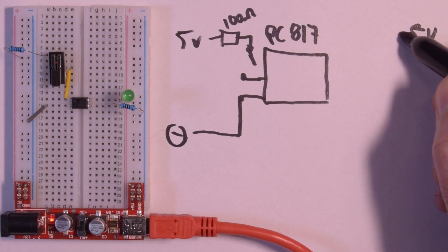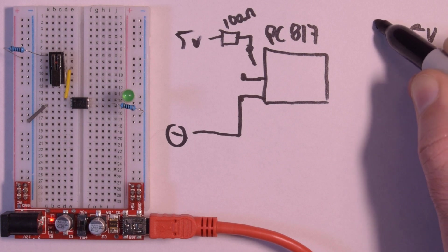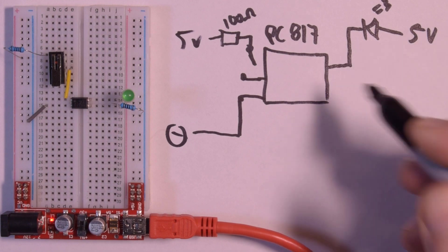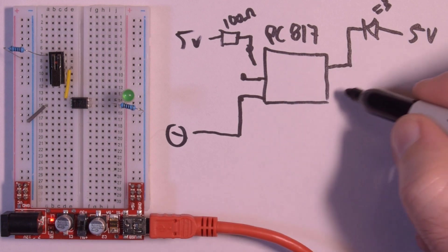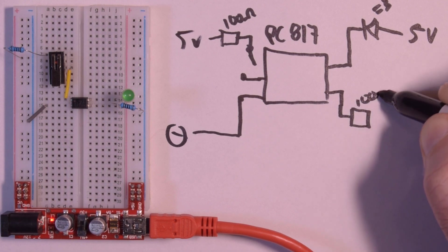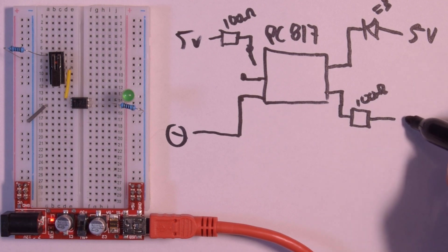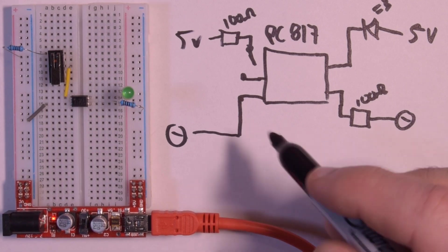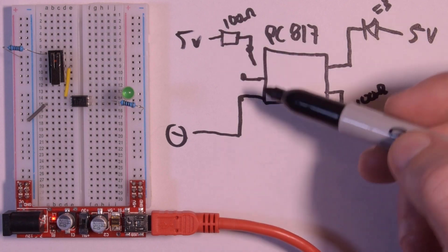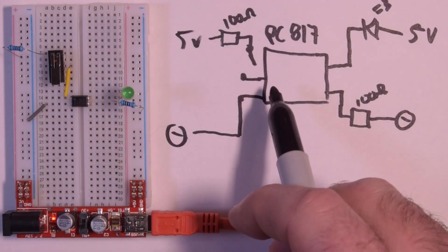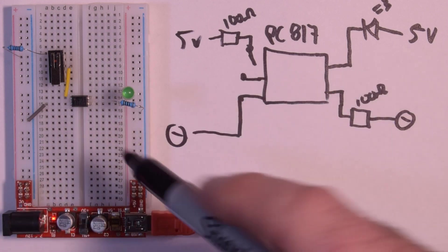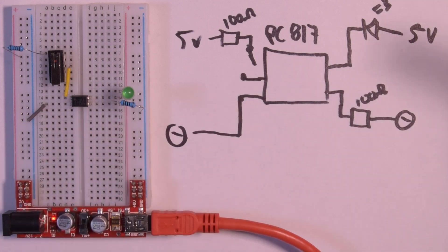On the other end though, we have 5 volts, we have our LED, into the PC817, and then a resistor, 100 ohms, and then ground. So basically it looks exactly the same aside from the fact that our LED on this side has been replaced by the PC817.